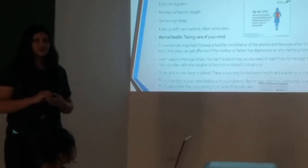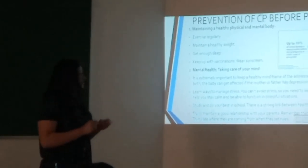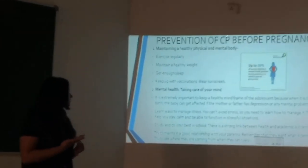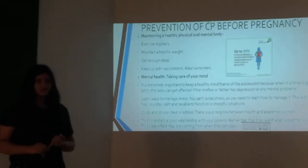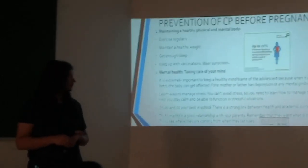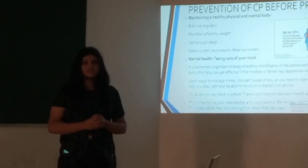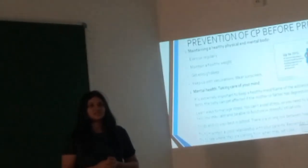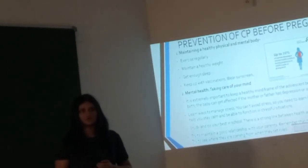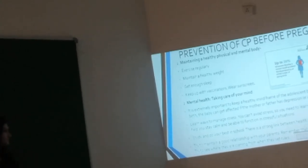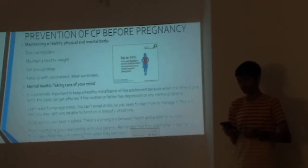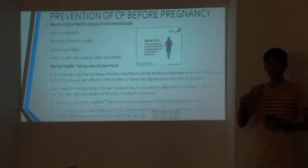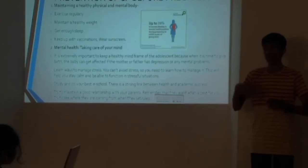Prevention of Cerebral Palsy before pregnancy starts at the adolescent age. There are two ways of maintaining your health: not only physically, but also maintaining your mental health. Maintaining a healthy physical body means exercising regularly, drinking lots of water, following a balanced diet, sleeping regularly, and keeping up with vaccinations. In addition, taking care of mental health is also very important. It is extremely important to keep a healthy mindset during adolescence so that during pregnancy and delivery, the baby doesn't get affected. This could happen if one of the parents is suffering from anxiety or depression. Stress must be avoided, and if not, it must be managed, so that mothers can stay calm. Stress also leads to hypertension, which can harm the delivery.